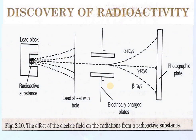In this experiment, a radioactive substance is placed in a lead block and passed through a lead sheet with a hole so that a fine beam can pass. By passing this radioactive radiation through electrically charged plates and placing a photographic plate, we observe that the radioactive radiations split into three parts: one part gets deflected towards the negative electrode and is called alpha rays, while another part gets deflected towards the positive electrode and is named beta rays.